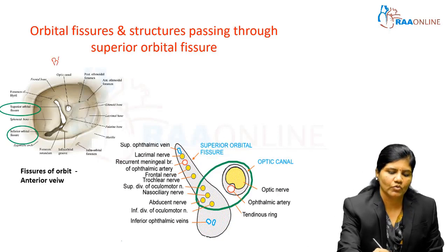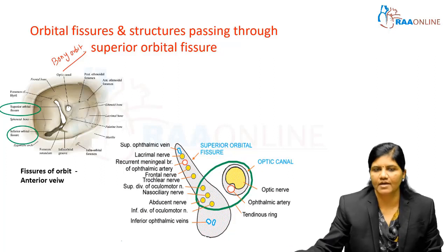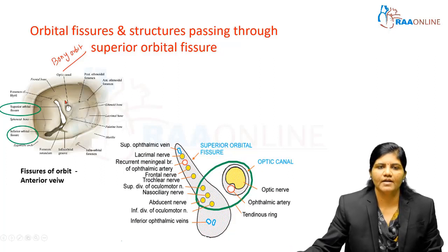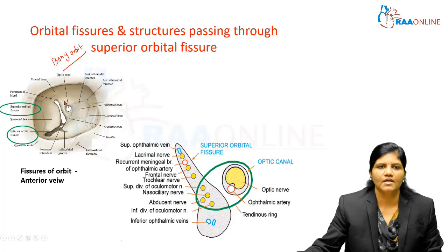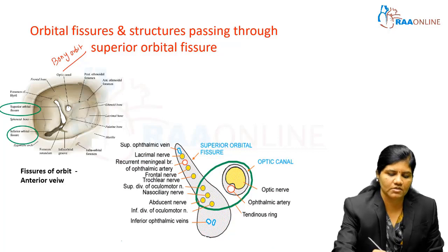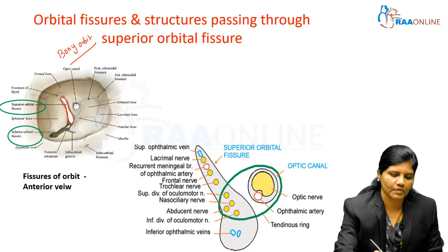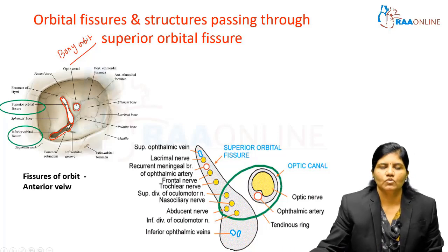This is the bony orbit viewed from the anterior aspect. In the anterior view you can appreciate two fissures: in the suprolateral aspect, this is the superior orbital fissure, and in the infralateral aspect there is the inferior orbital fissure. There is also an oval-shaped opening — this is the optic canal. For this topic we need to know the structures passing through the superior orbital fissure.